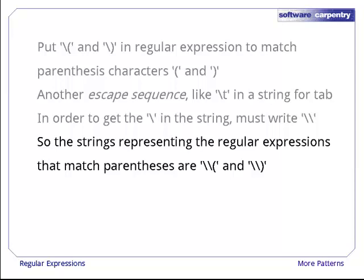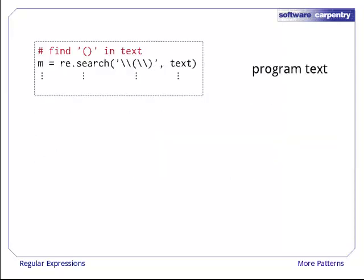This might be confusing, so let's take a look at how the various layers work. Our program text, i.e., what's stored in our .python file, looks like this. And here, we have two backslashes, an open parenthesis, two backslashes, and a closed parenthesis inside quotes.